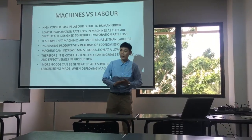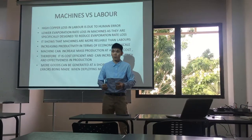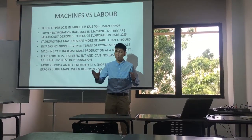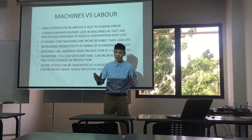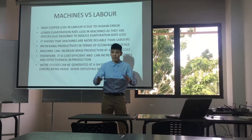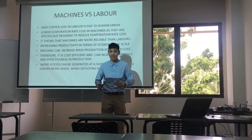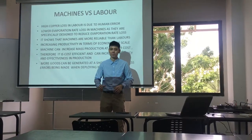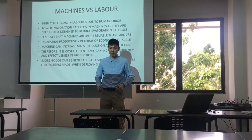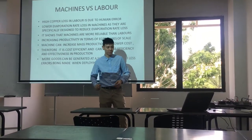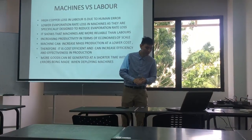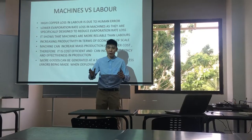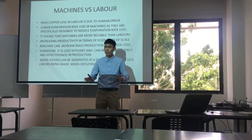This indicates that the high copper loss in labour is due to human error, because humans tend to make mistakes. Machines, on the other hand, are specifically designed to reduce evaporation rate loss, which really benefits production greatly. This signifies that machines are much more reliable.